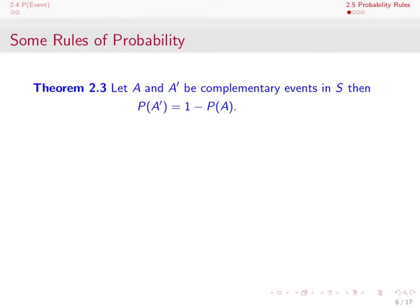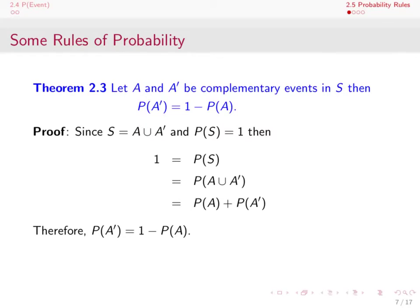Now let's look at the complement rule. For two complementary events A and A complement in S, the probability of A complement equals 1 minus the probability of A. Equivalently, the sum of their individual probabilities equals 1. Since A and A complement are complementary, their union equals S, and by axiom 2 the probability of S is 1. Therefore the probability of A union A complement equals 1.